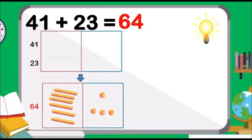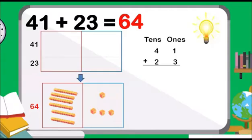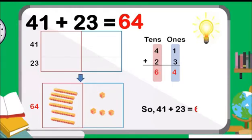Do we get the same answer? Let us check it again by adding the numbers in vertical form. Let us add the numbers from right to left. Let us add the ones: 1 plus 3 is equal to 4. Add the tens: 4 plus 2 is equal to 6. So, 41 plus 23 is equal to 64.